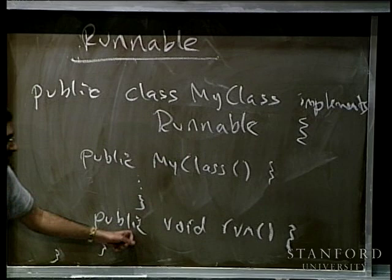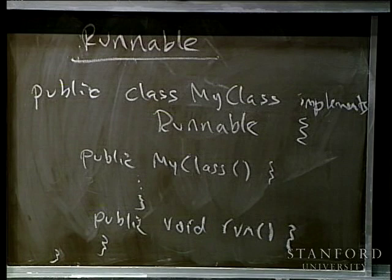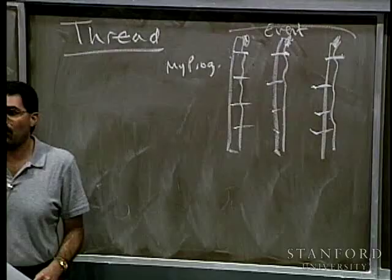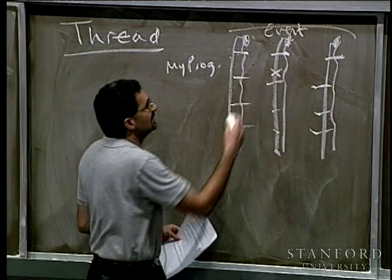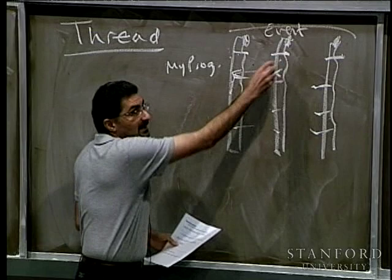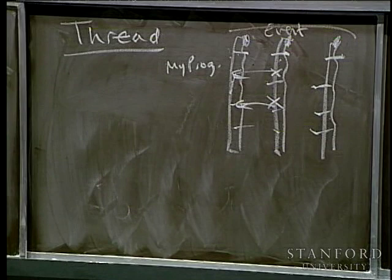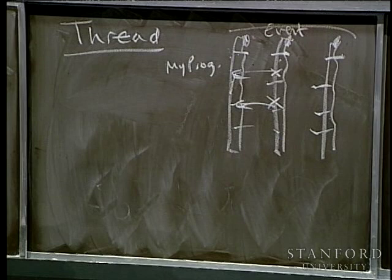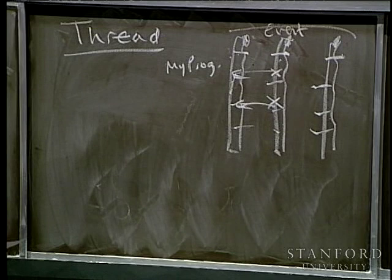When you wrote programs with interactors or mouse clicks, there was another thread called the event thread also running. The event thread was saying 'hey, mouse click' — when a mouse click happened, it would tell the people who were listening for those events. So when you were dealing with mouse clicks and movements, there were actually multiple threads running: a separate thread was getting events and telling the listeners that those events actually happened.